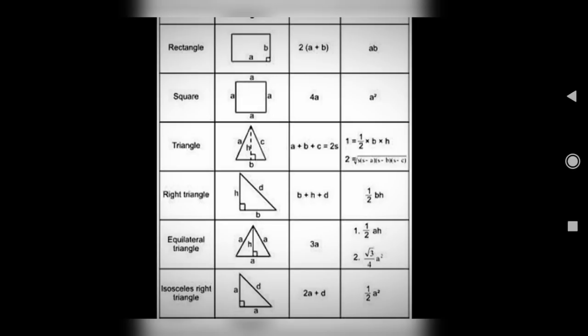Here perimeter of square is 4A and area is A square. Here triangle that is half into base into height. If it is S, the perimeter is 2S. The right triangle perimeter is B plus H plus D. Area is half into base into height.